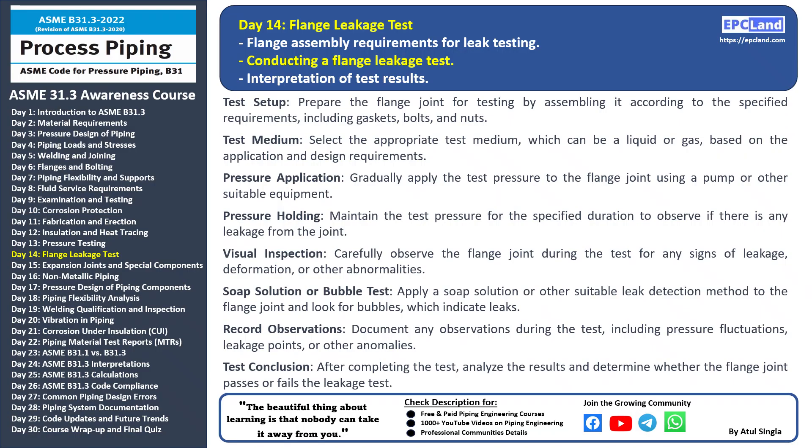In the next session we discuss the important topic of conducting a flange leakage test — a crucial step in ensuring the integrity and safety of the piping system. Conducting a flange leakage test involves several key steps to ensure that the assembled joint can withstand the specified pressure without any leaks. Test setup: before conducting the test, make sure the flange joint is assembled according to the specified requirements, including proper installation of gaskets, bolts, and nuts.